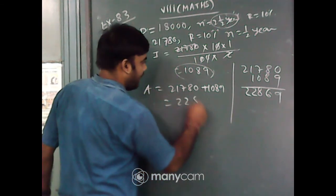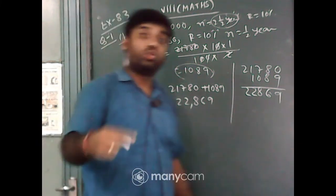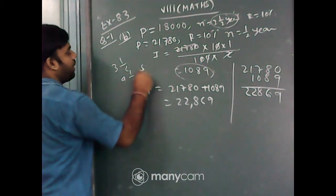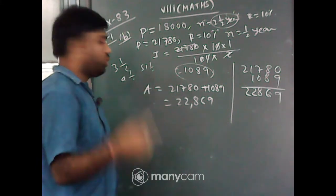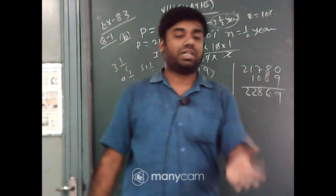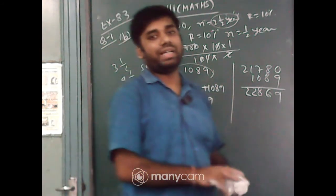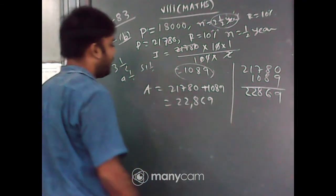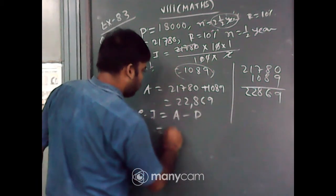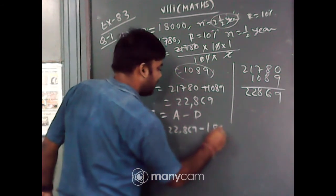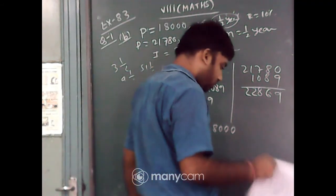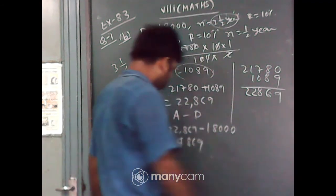So the amount comes to 22,869. This is the amount at the end of 2 and a half years. So whenever you have a time like 3 and a half, 4 and a half, or 1 and a half years, first take the whole number part, then calculate the fractional part as simple interest and add it to get the final amount. Now, CI equals amount minus principal, that is 22,869 minus 18,000, which gives compound interest of 4,869.